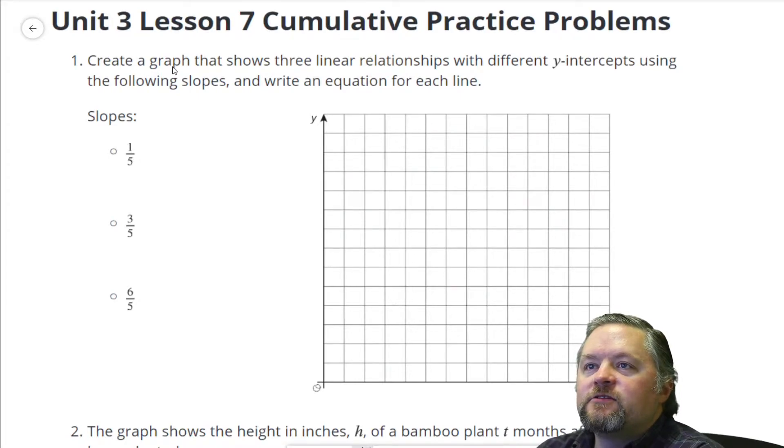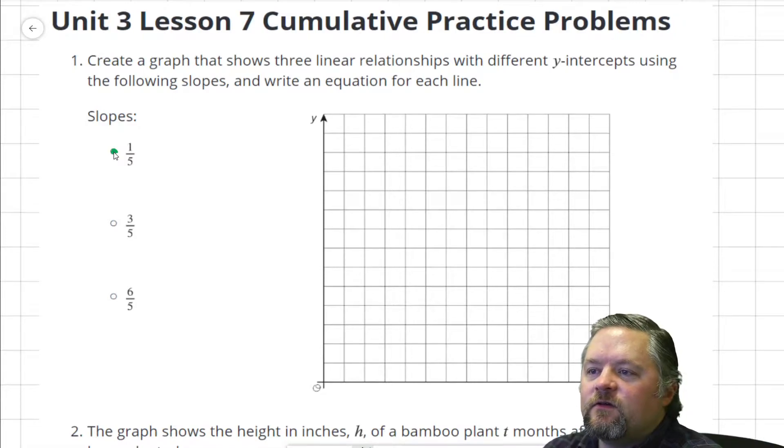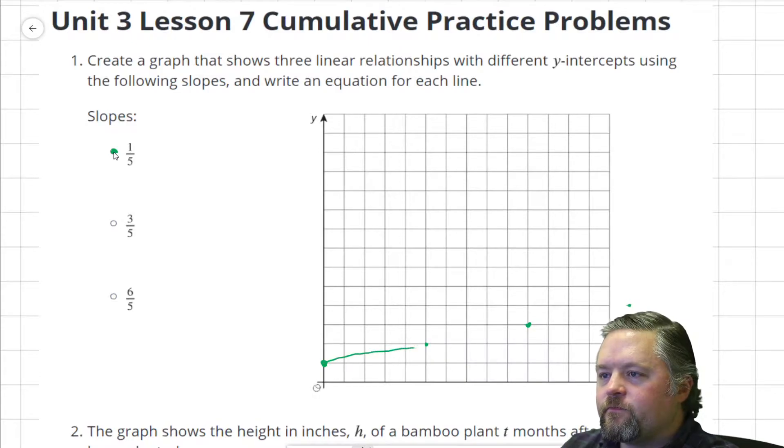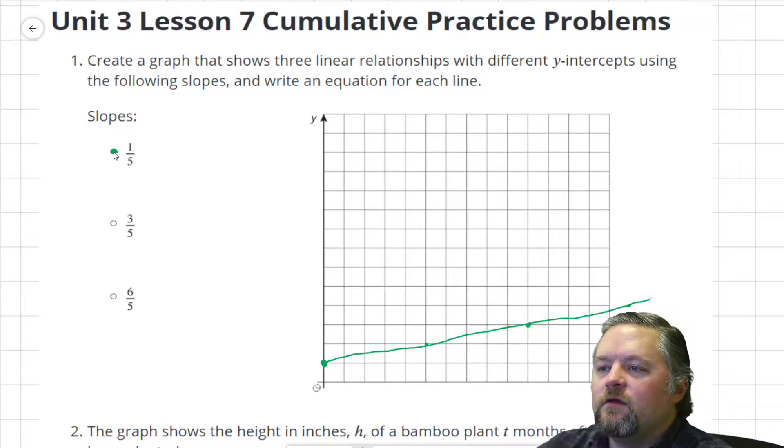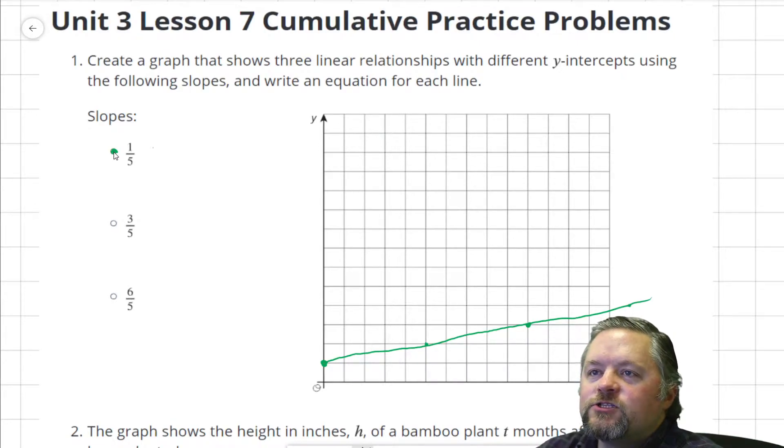Our first problem says create a graph that shows three linear relationships with different y-intercepts using the following slopes and write an equation for each line. So the first one has to have a slope of 1 over 5. I'll start it right here. Slope of 1 fifth means we go up 1 over 5, up 1 over 5, up 1 over 5. Beautiful line. Write the equation y equals 1 fifth x plus our y-intercept, which is 1.